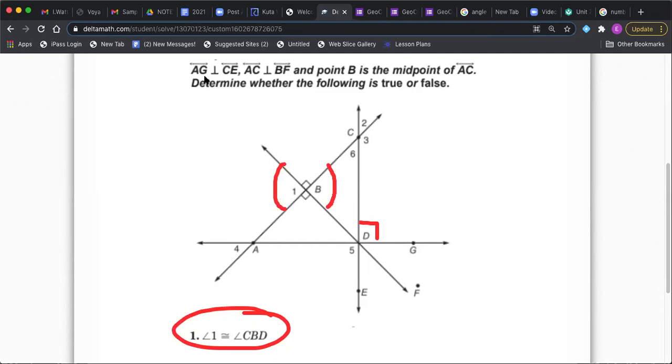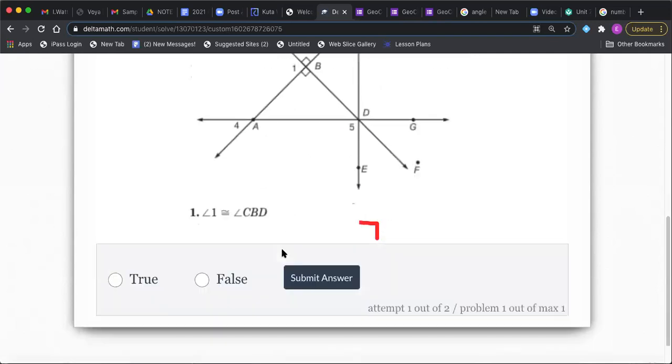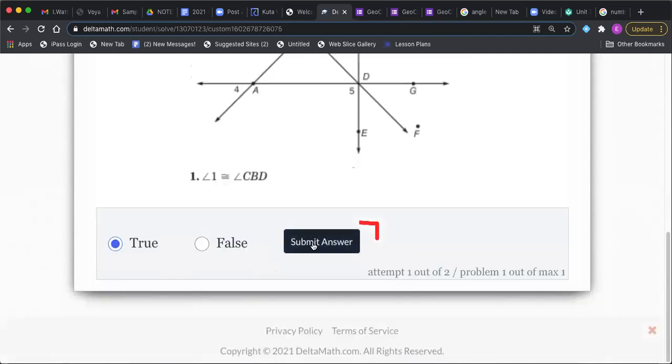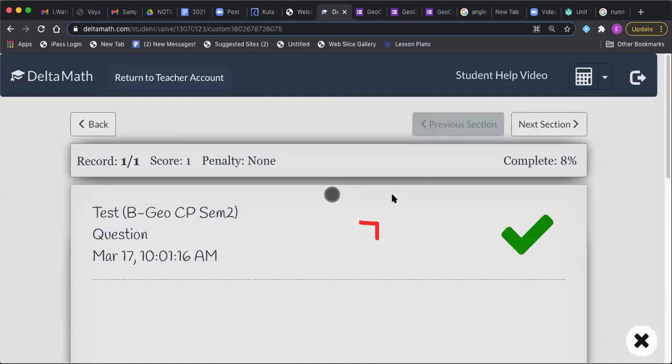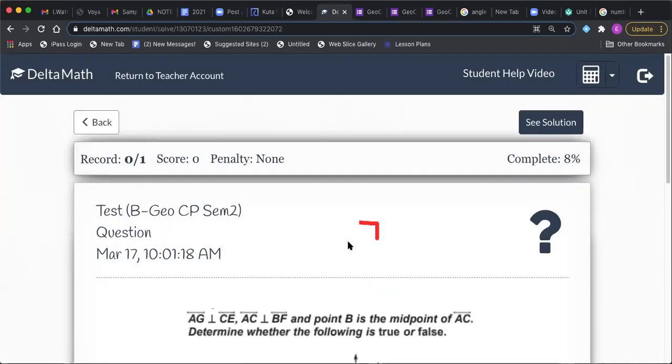I think I heard a yes. Yes, they are. They're vertical angles. Not only are they vertical, I can actually tell what their degree is. They're both 90s, aren't they? Because those lines are perpendicular. So yeah, this one's absolutely true.